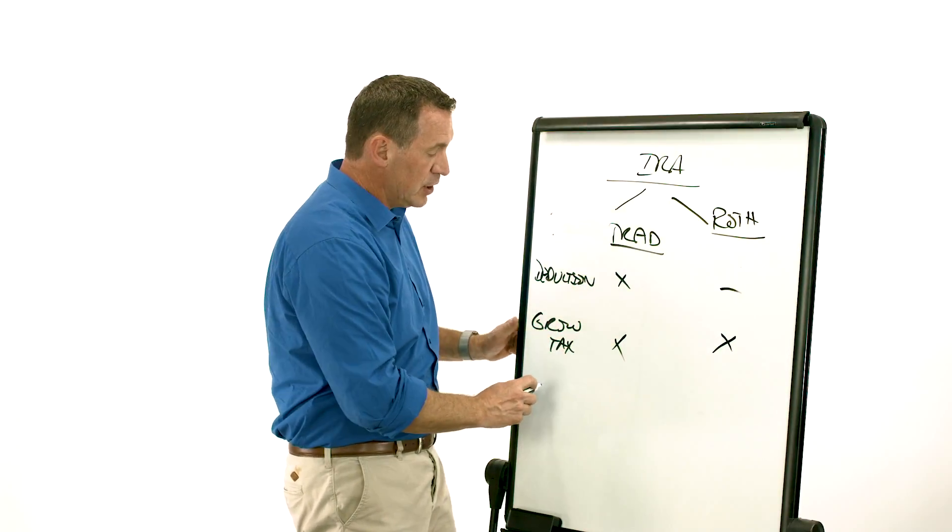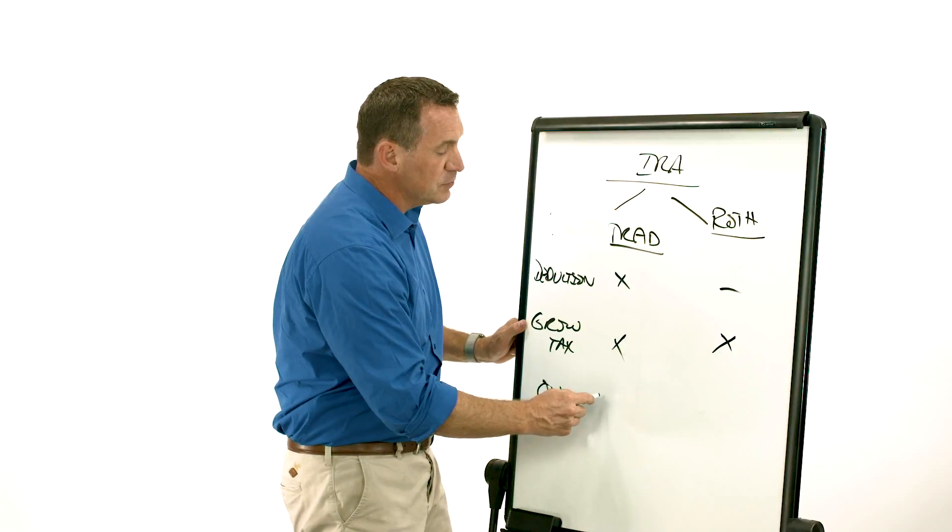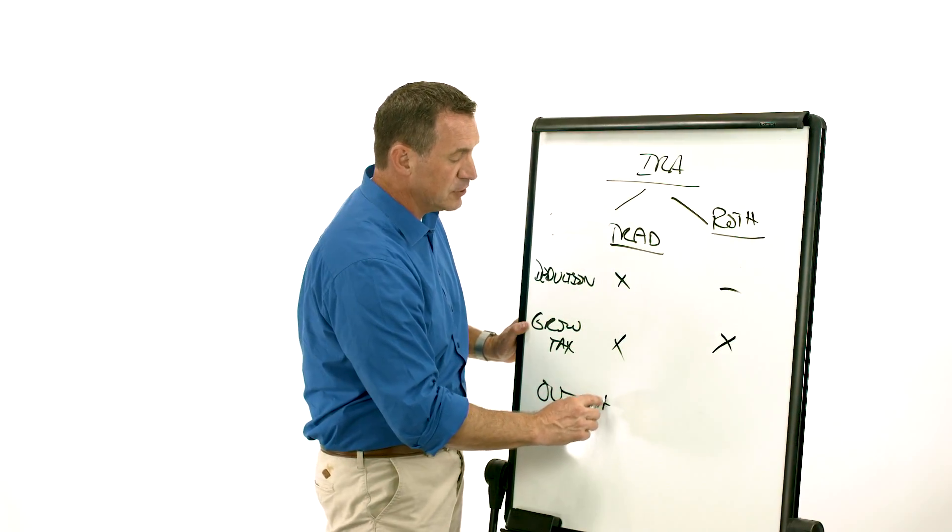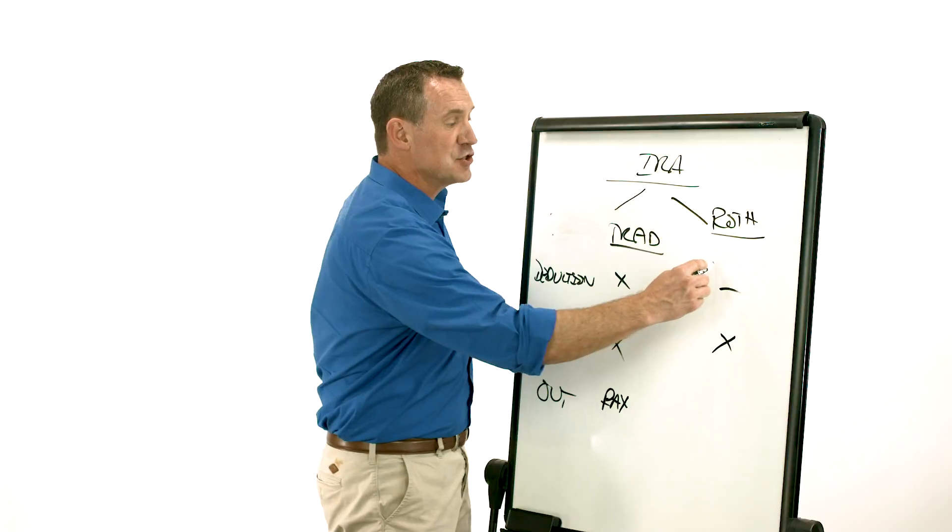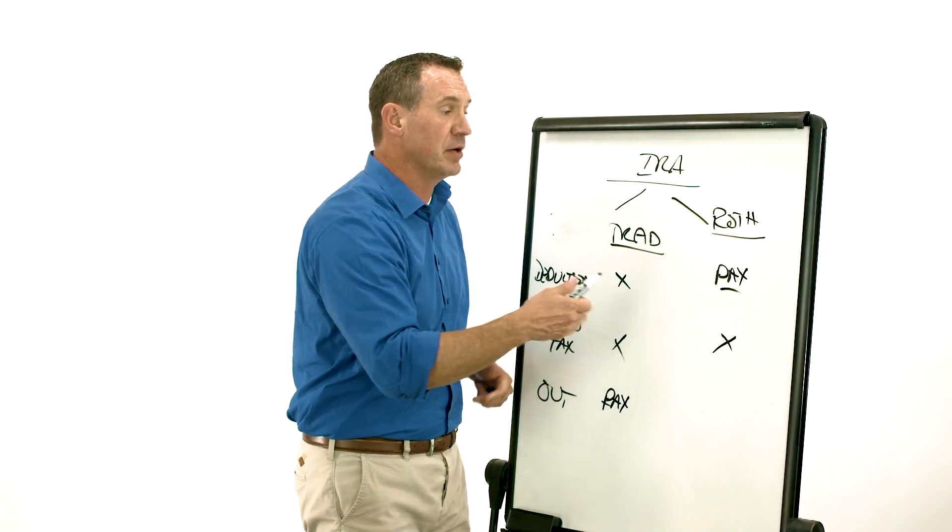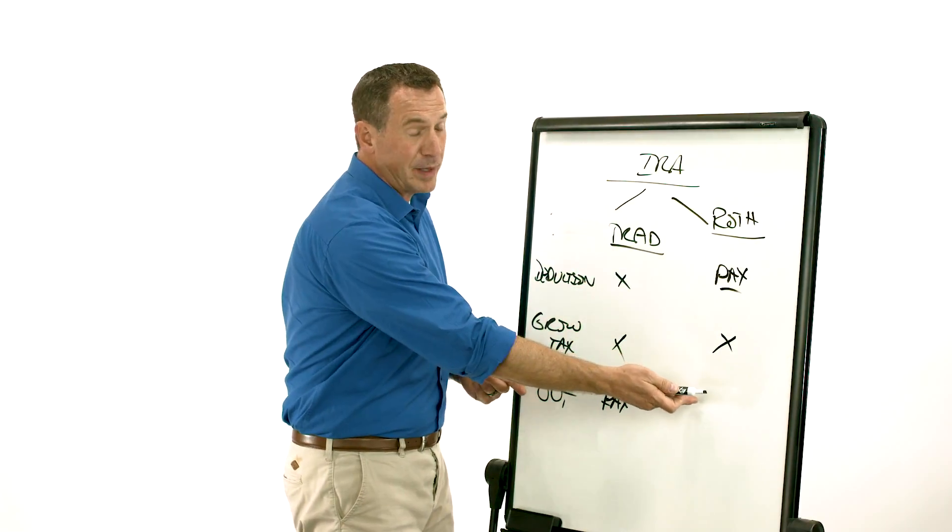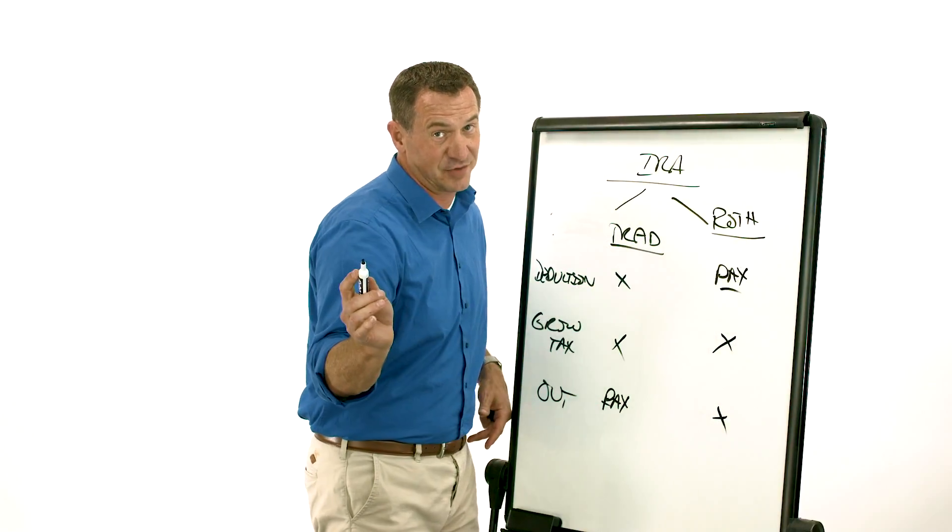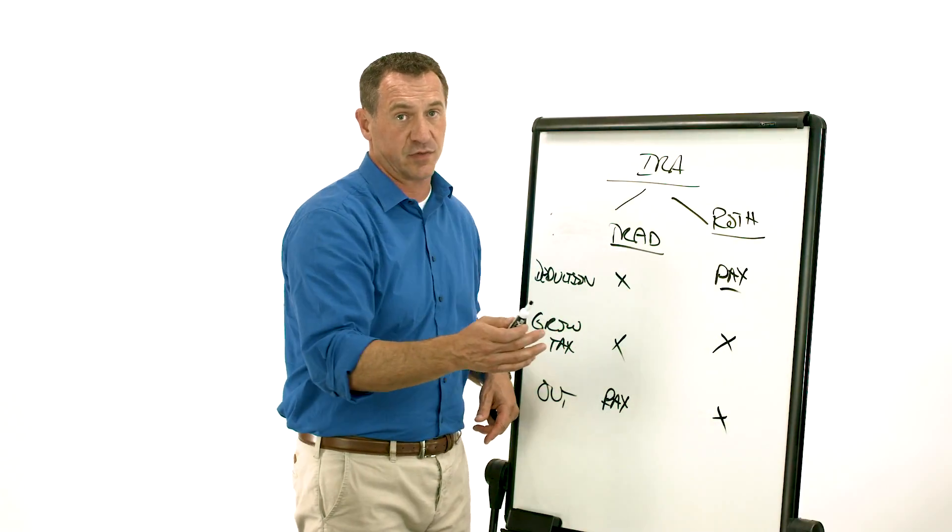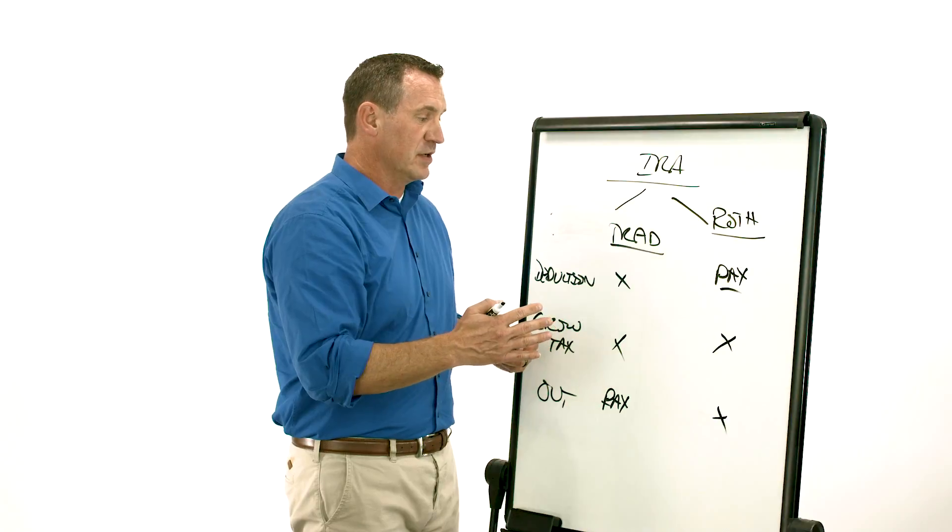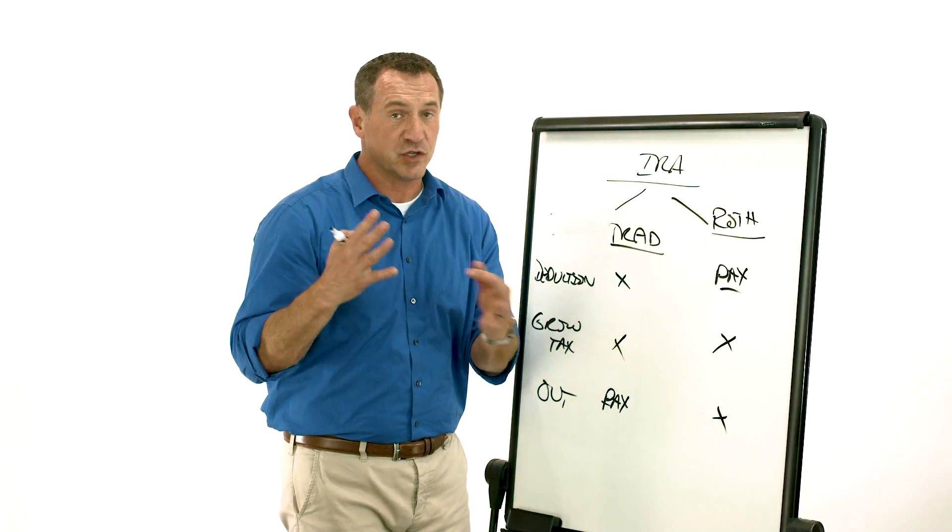Well, that's the key word. Here, when it comes out, you do pay tax with a traditional, so you pay tax here. And I guess you pay tax before you can put money in a Roth. But what's cool about the Roth is it comes out tax-free, so it grows tax-free and comes out tax-free. So is there a difference in contributions and which one's better?